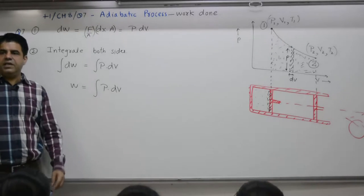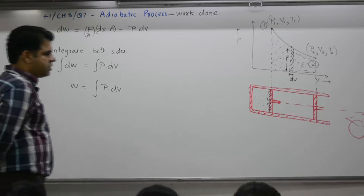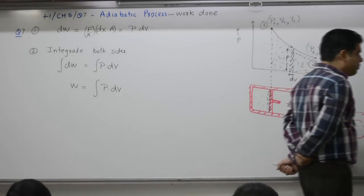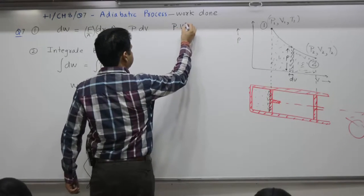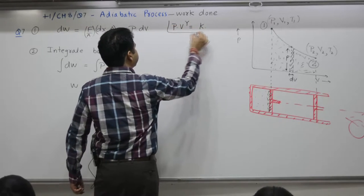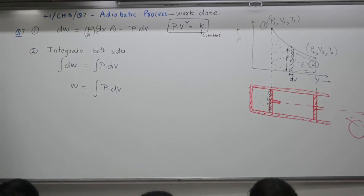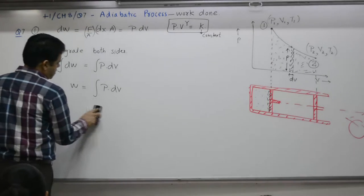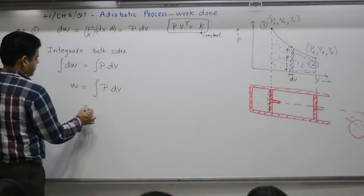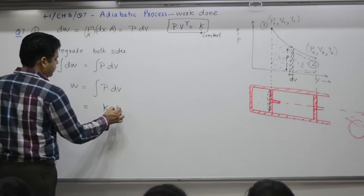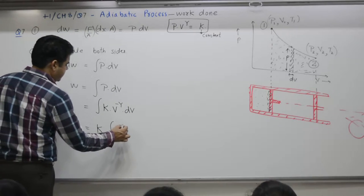Both P and V vary. There is a relationship between P and V. Adiabatic process: for the whole process P·V^γ equals constant. Let this constant be K. P·V^γ equals constant K. P equals K divided by V^γ, which is K·V^(-γ). Integration: K is a constant, integration of V^(-γ)·dV.